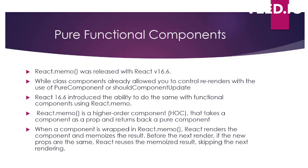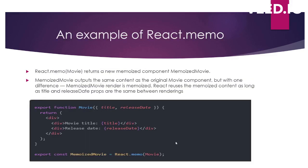When a component is wrapped in React.memo, on the first render it returns the component it received as a prop, but it also memoizes the result — saves it in memory. Before the next render, it compares the props. If the props are the same, it returns the same memoized result. This is an example: the Movie component has two props, title and release date, and is wrapped inside React.memo.